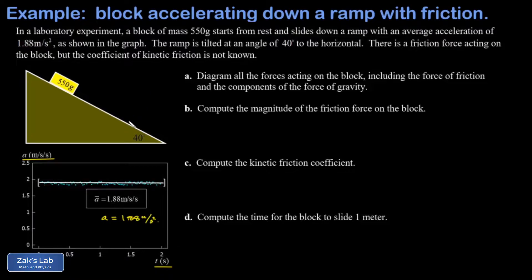Going back to look at the experiment, I see that the ramp is inclined at an angle of 40 degrees. The mass of this block is 550 grams, which I want to express as kilograms, so that's 0.550 kilograms, and we're asked a whole list of questions about the experiment.